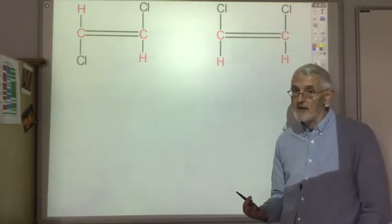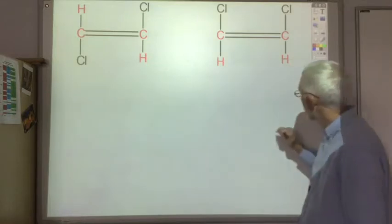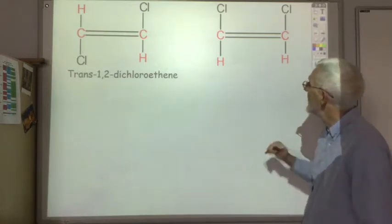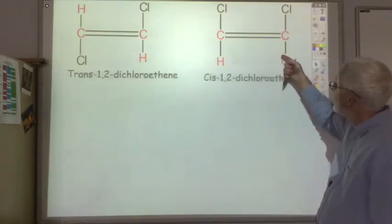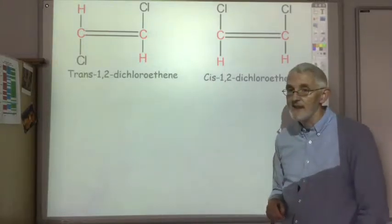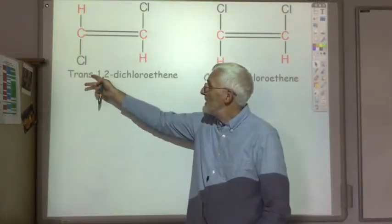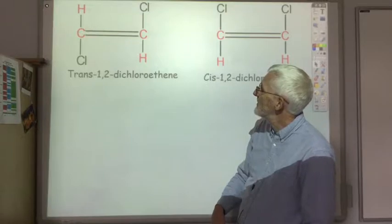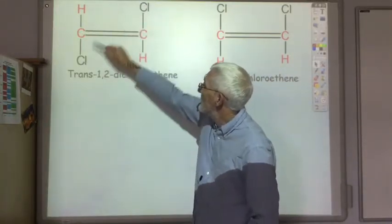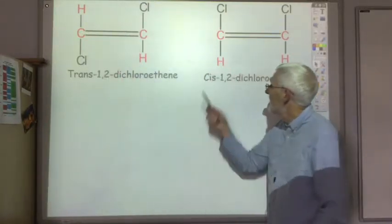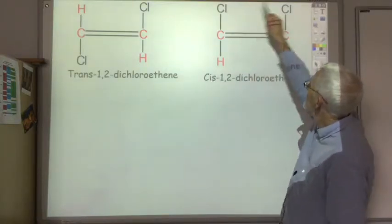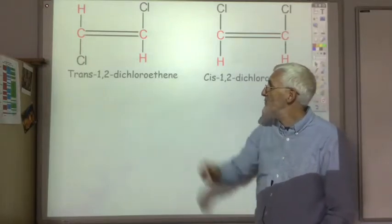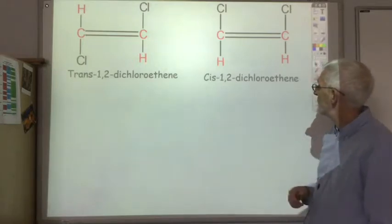They're both 1,2-dichloroethene but we call this one trans-1,2-dichloroethene and this one is cis-1,2-dichloroethene. Trans means that the substituted groups, the thing that's not the hydrogen attached to the carbon, are on separate different sides of the double bond. And cis means that they're on the same side of the double bond to each other.